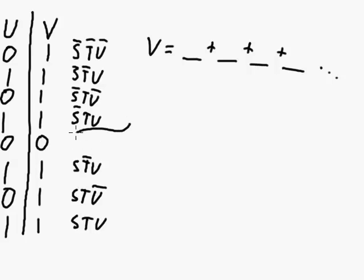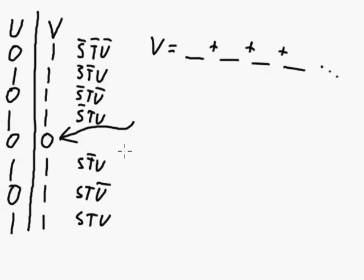So wouldn't it be easier if we could somehow just deal with this particular row where the output's a 0? There's only one row where the output's a 0. So wouldn't it be easier to deal with that? And the answer is yes, it is. And we can use the product of sums expression to do that.